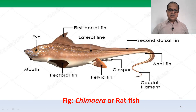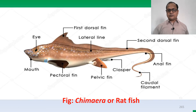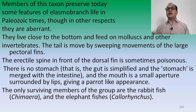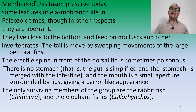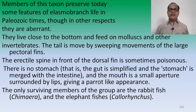Holocephali have claspers as modifications of the pelvic fin rays, a lateral line system, and large pectoral fins. The entire head is fused with the snout between the trunk with a ventral mouth. Members of this taxon preserve some features of elasmobranch life from the Palaeozoic. They live close to the bottom feeding on fallen mollusks and other invertebrates. The erectile spine in front of the dorsal fin is sometimes poisonous. There is no stomach — the gut is simplified and the stomach is merged with the intestine. The mouth is a small aperture surrounded by lips giving a parrot-like appearance.